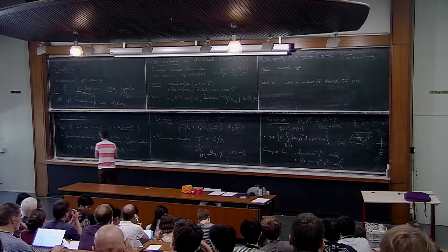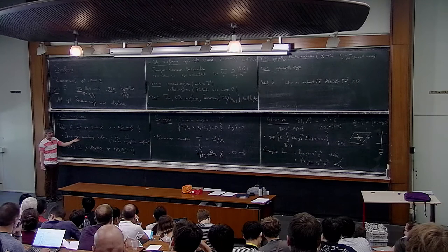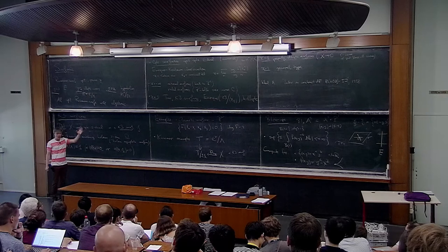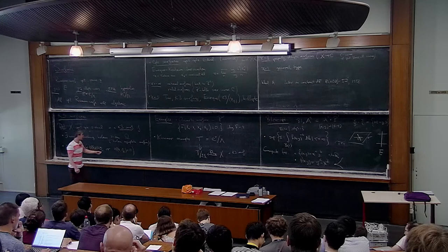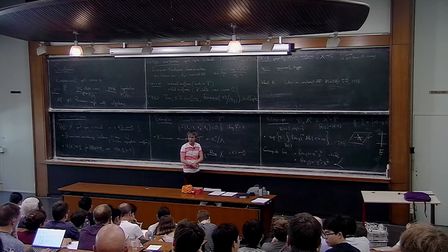To check the quartic surface is K3, there are two things to verify. The fundamental group condition follows from the Lefschetz hyperplane theorem: a quartic surface has the same fundamental group as P³, which is trivial. The holomorphic two-form condition I'll explain now: if somebody gives you a polynomial, you can write down explicitly the holomorphic two-form using residues.